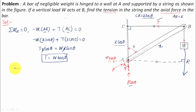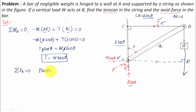Now we use one more equilibrium equation: summation of all forces in the X direction equals zero. Forces to the right are positive and to the left are negative. P sine theta acts to the right (positive), and T acts to the left (negative). So P sine theta minus T equals zero, giving P equals T divided by sine theta.